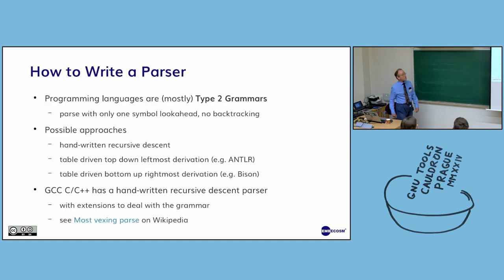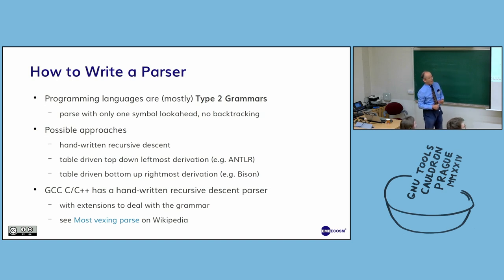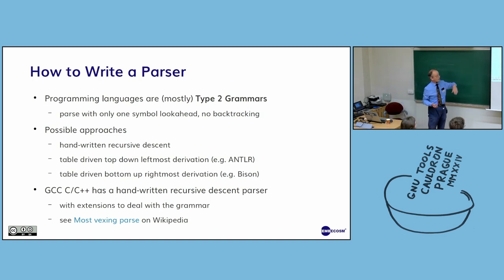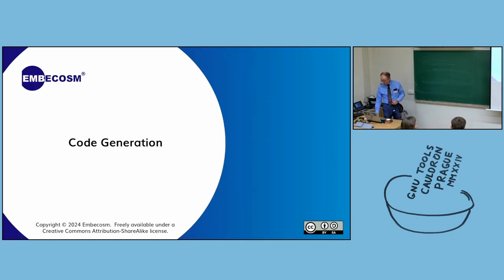Programming language parsers mostly use type 2 grammars — Noam Chomsky's classification. The key property is that you can tell what you're dealing with by looking just one symbol ahead in the stream, so you don't have to backtrack. You can handwrite them with recursive descent, do table-driven automated ones with tools like ANTLR, or table-driven bottom-up using Bison. GCC's C++ front end has a handwritten recursive descent parser with extensions to handle the grammar. Look up 'most vexing parse' on Wikipedia for an interesting example.